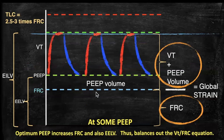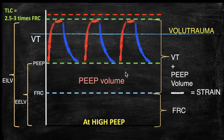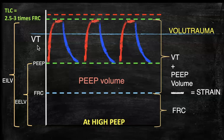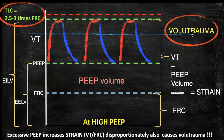Returning to our earlier example: healthy PEEP may increase global strain by introducing PEEP volume, but its beneficial effects — reducing atelectasis, improving compliance, CO2 elimination, and oxygenation through alveolar recruitment — keep end-inspiratory lung volume safely away from total lung capacity. However, excessive PEEP introduces excess PEEP volume, leading to excess strain and pushing end-inspiratory volume closer to total lung capacity. At 30 breaths per minute, this risks volume trauma and ventilator-induced lung injury.